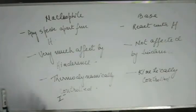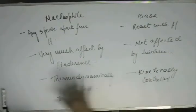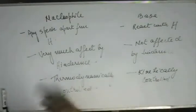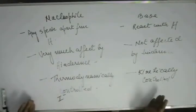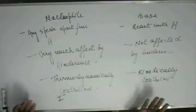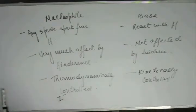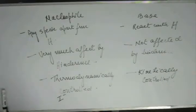Whenever electronic density is less, ions are stable — be it positive charge, be it negative charge. That's why resonance brings about stability: resonance spreads the charge throughout the molecule, decreasing electronic density and bringing about stability. So I⁻, being stable, will not be a base but will be a nucleophile.